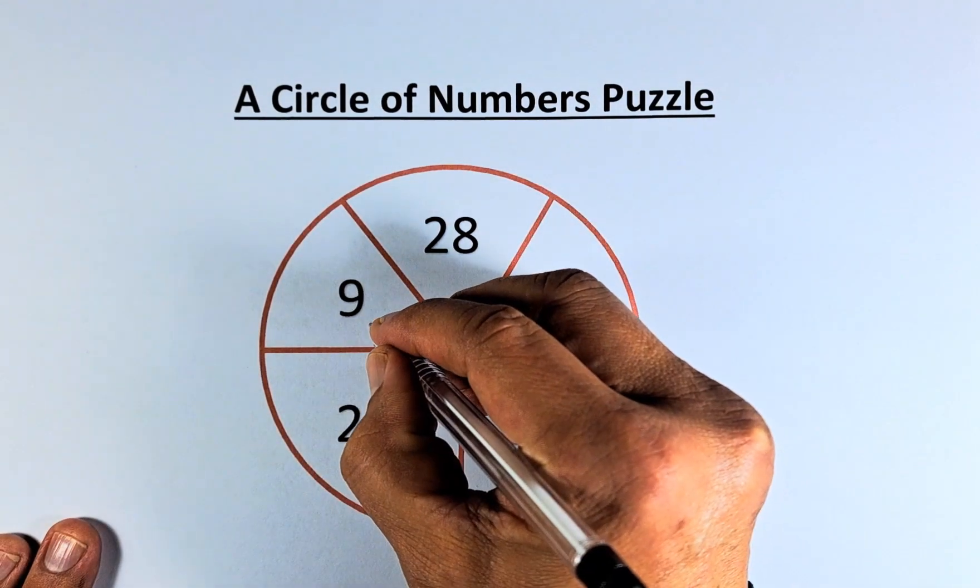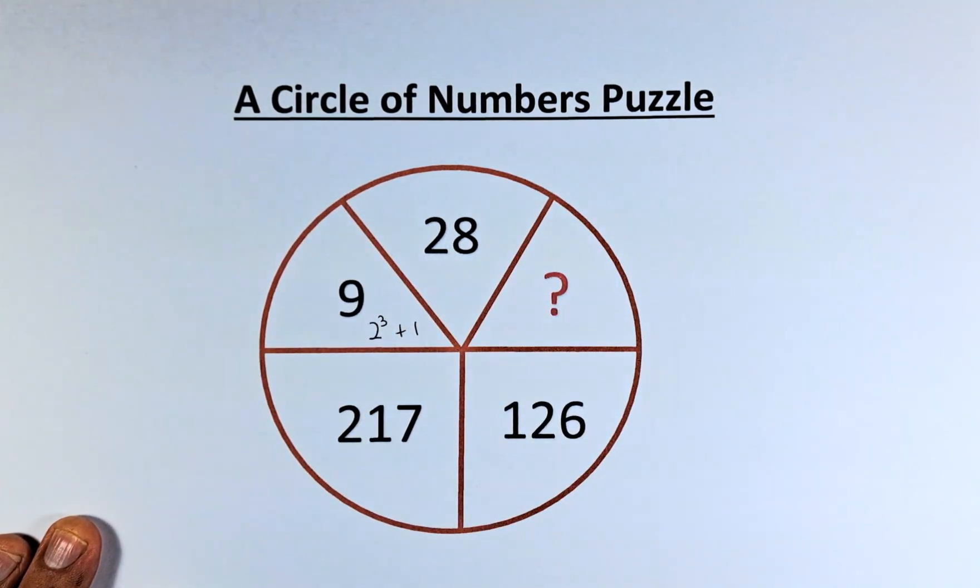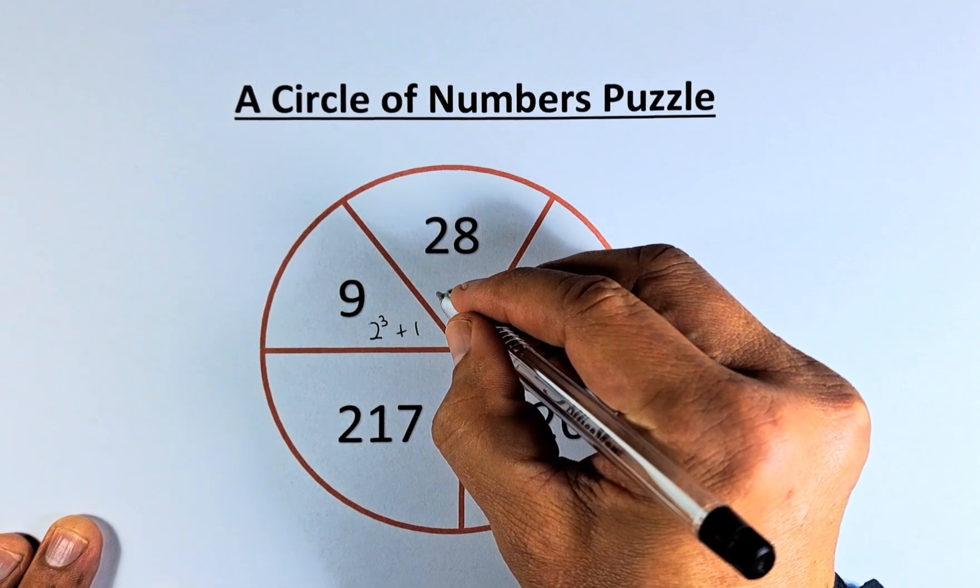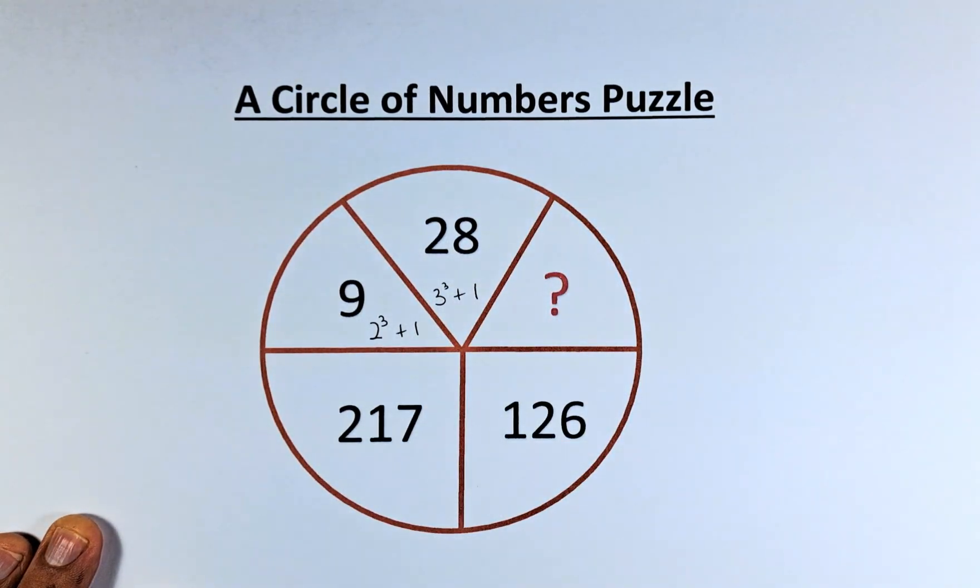9 is actually made up of 2 cubed plus 1. 2 cubed is 8, 8 plus 1 is going to be 9. 28 is the same as 3 cubed plus 1. So 3 cubed is 27 plus 1, that will give us 28.